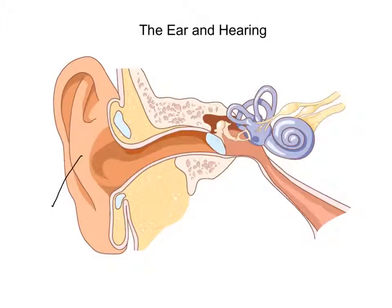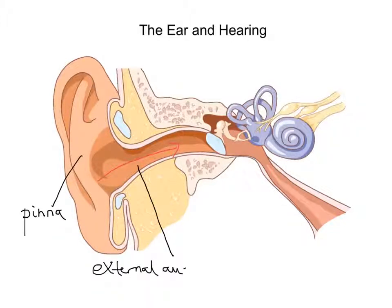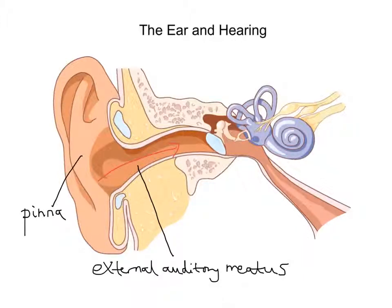It starts with this structure here that is called the pinna. So this outer earlobe that we see, or the pinna, basically collects those sound waves. And those sound waves pass down this tube here. This region in our ear is known as the external auditory meatus. The sound waves are collected by the pinna and they pass down this tube called the external auditory meatus, and they reach the eardrum.